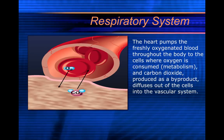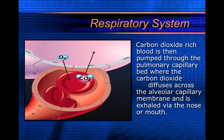The heart pumps freshly oxygenated blood throughout the body to the cells where oxygen is consumed — that's called metabolism. So this is why capnography can give you an idea about cellular metabolism. You're not going to be able to see at the cellular level what's happening, but you know you must be metabolizing oxygen to be producing CO2 if you're getting capnography values. Carbon dioxide-rich blood is then pumped through the pulmonary capillary bed where CO2 diffuses across the alveolar capillary membrane — oxygen goes from your lungs into your circulatory system and CO2 goes out into the lungs so you can get rid of it.